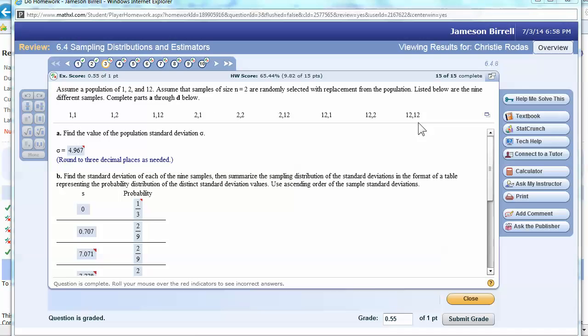Listed below are the samples. Complete parts A through D. Find the value of the population standard deviation sigma. Now it's interesting, several of the questions did not start this way. They actually started by going through the distribution, finding the mean of the distribution, and so on.